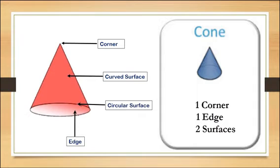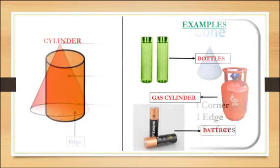Now as shown in the picture, a cone has one edge and one corner. The flat base of a cone is circular. The surface of the cone turns continuously around. It is called curved surface.